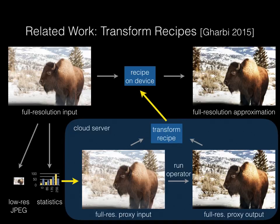After upsampling the low-resolution JPEG and running the operator, they construct, from the proxy input-output pair, a compact recipe which is cheap to download and execute on device. Our method is similar in spirit and constructs a compact representation of the transformation from low-resolution proxies and a similar set of statistics. However, we have the advantage of being entirely local without the need to run the operator at full-resolution, and our representation is only three times as big as a transform recipe.